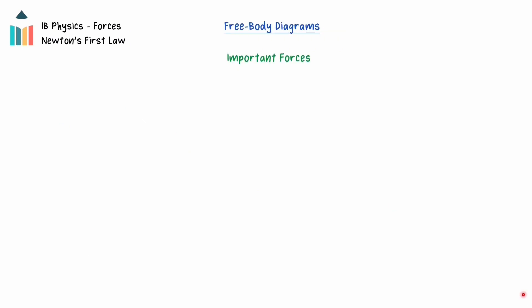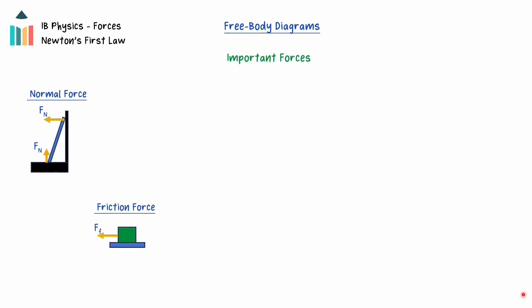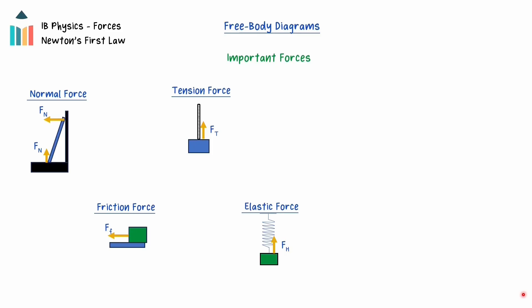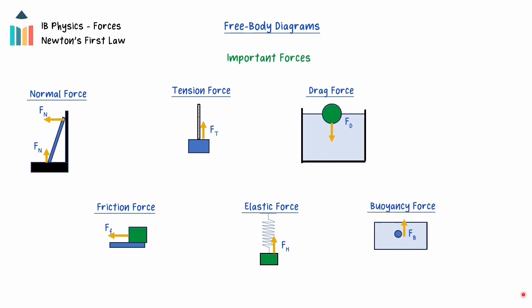Free body diagrams are used to identify and analyze all of the forces acting on an object. Let's review the directions of the key forces discussed in detail in the last video. The normal force is perpendicular to the surface of contact between two objects. The force of friction opposes motion. The tension force follows the rope and is always a pulling force. The elastic force is opposite the change in length of the spring. The drag force opposes the motion of an object through a fluid medium. The buoyancy force acts upwards on a body that is immersed in a fluid.